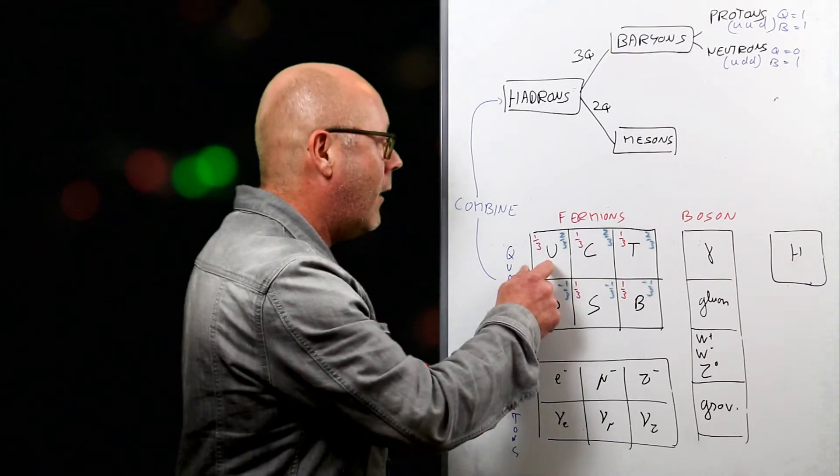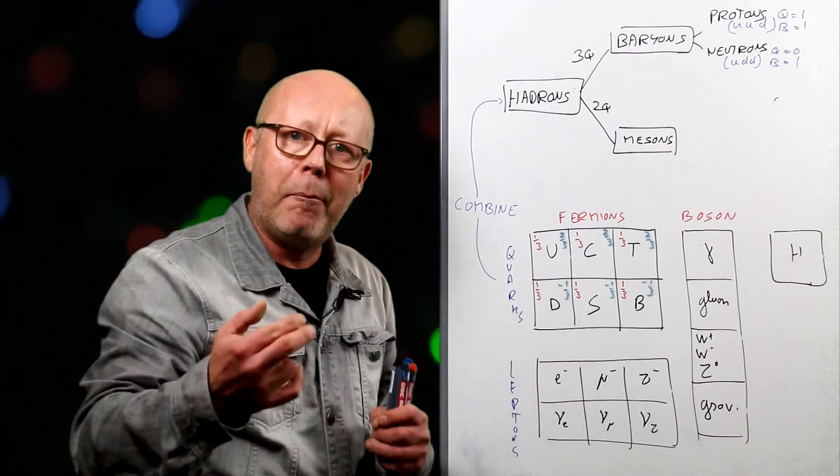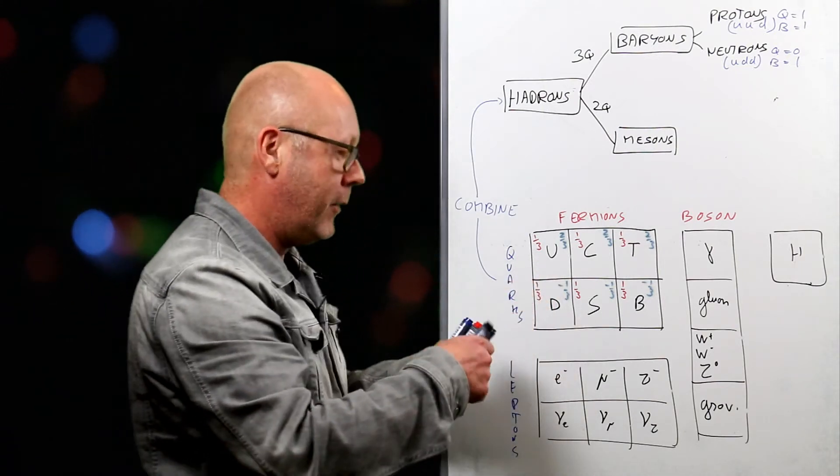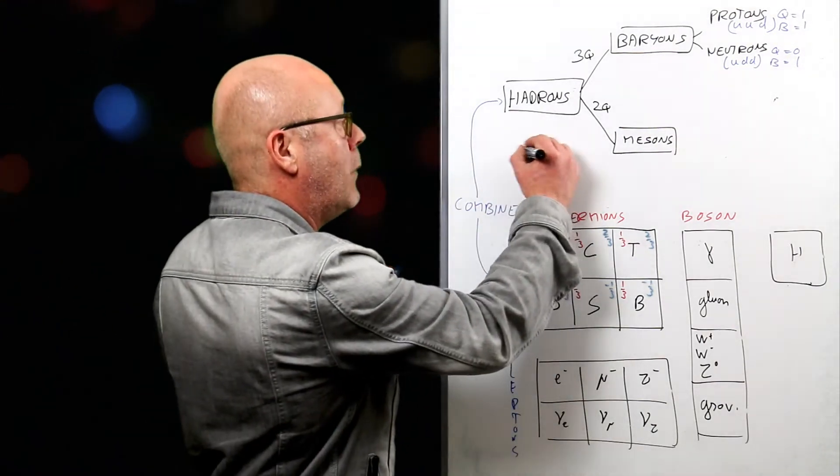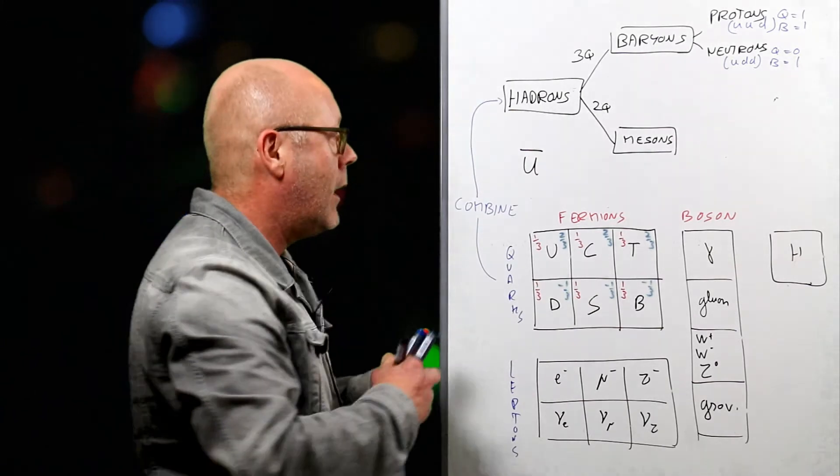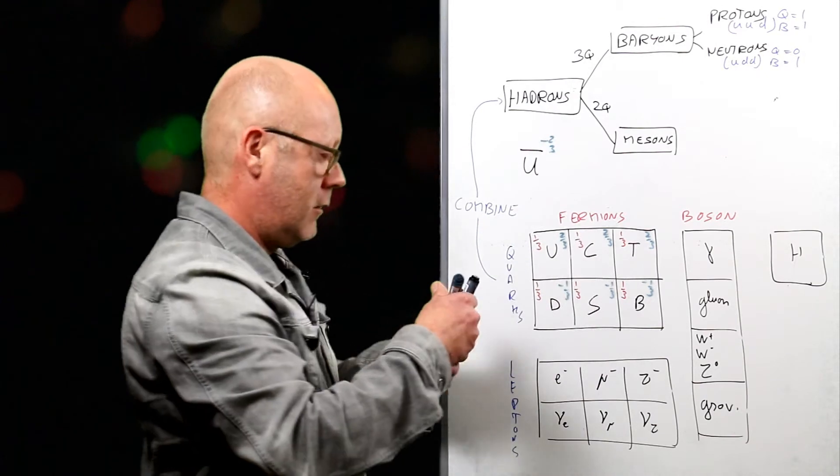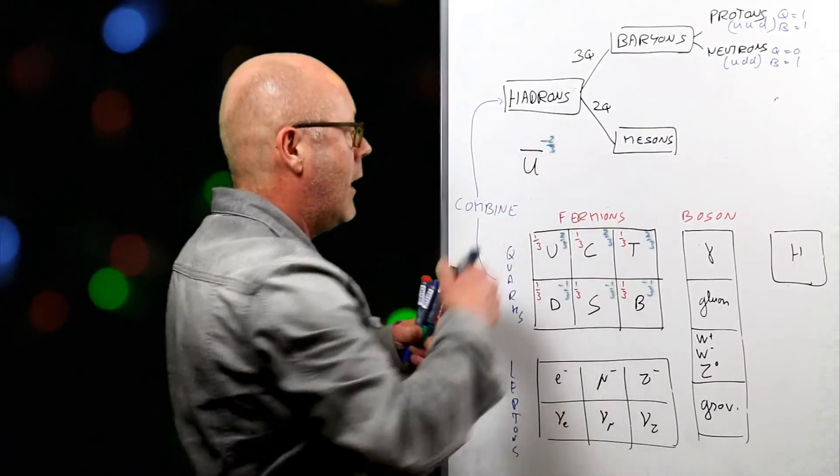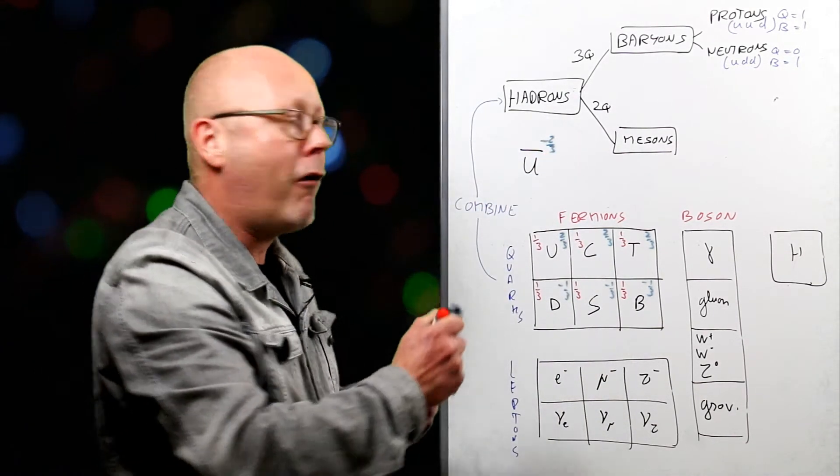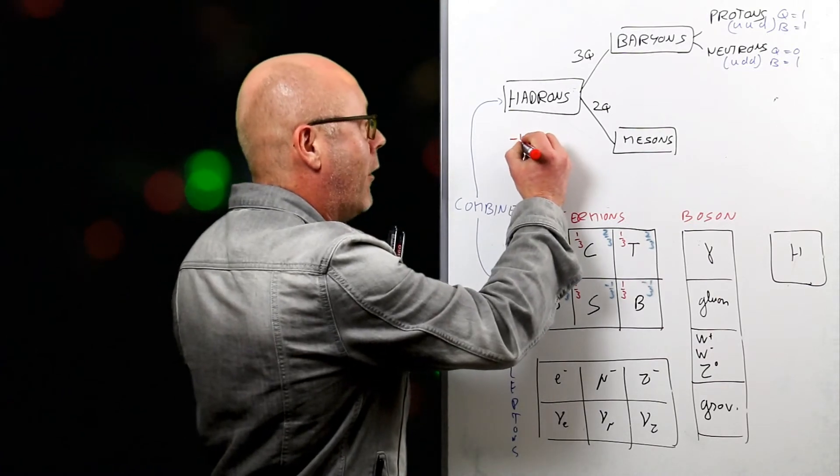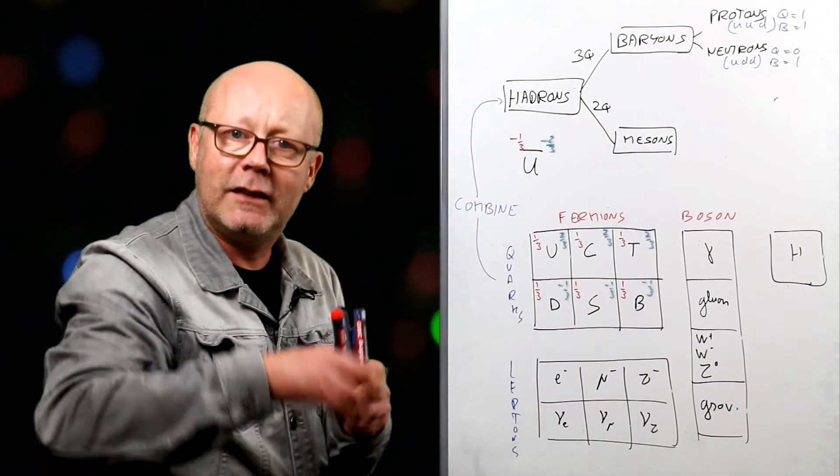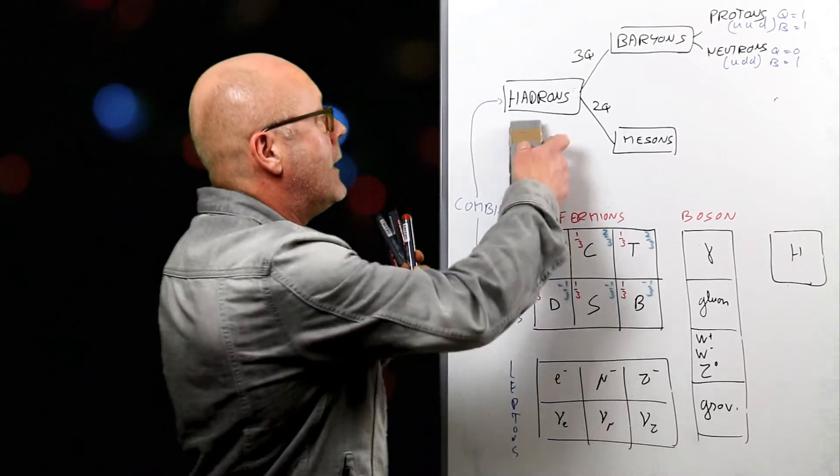For instance, the antimatter version of the up will be the anti-up that you write like this, U but with a bar on it, and it will have a charge of minus two thirds and a baryon number of minus one third. You see, the characteristics are just of opposite sign.